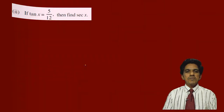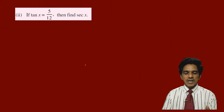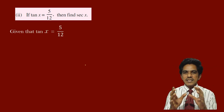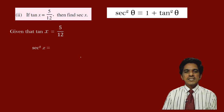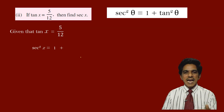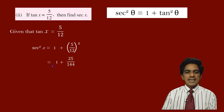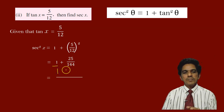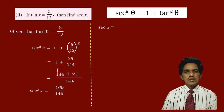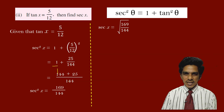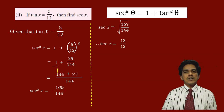Problem 2: If tan x = 5/12, find sec x. Using the identity sec²x = 1 + tan²x = 1 + (5/12)² = 1 + 25/144 = (144 + 25)/144 = 169/144. Taking the square root, sec x = √(169/144) = 13/12.